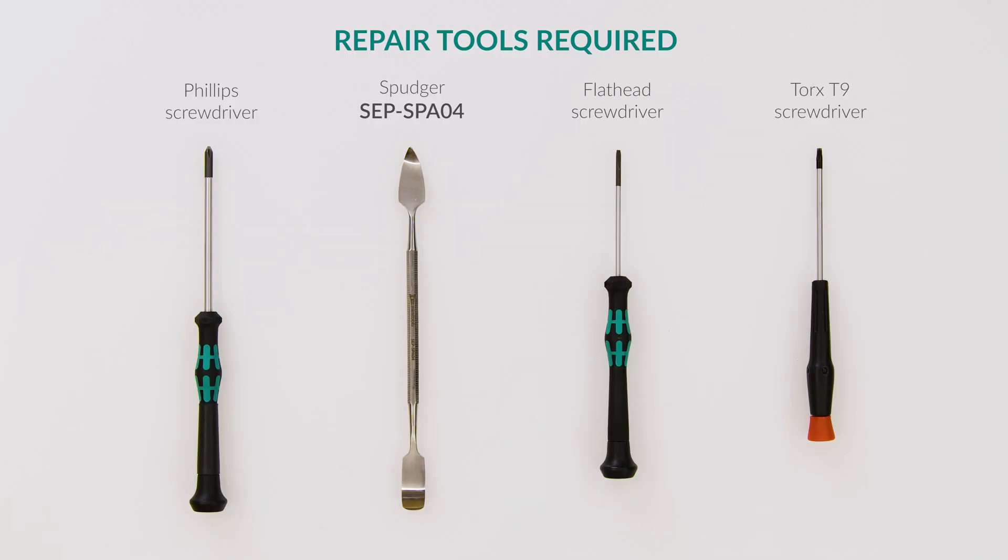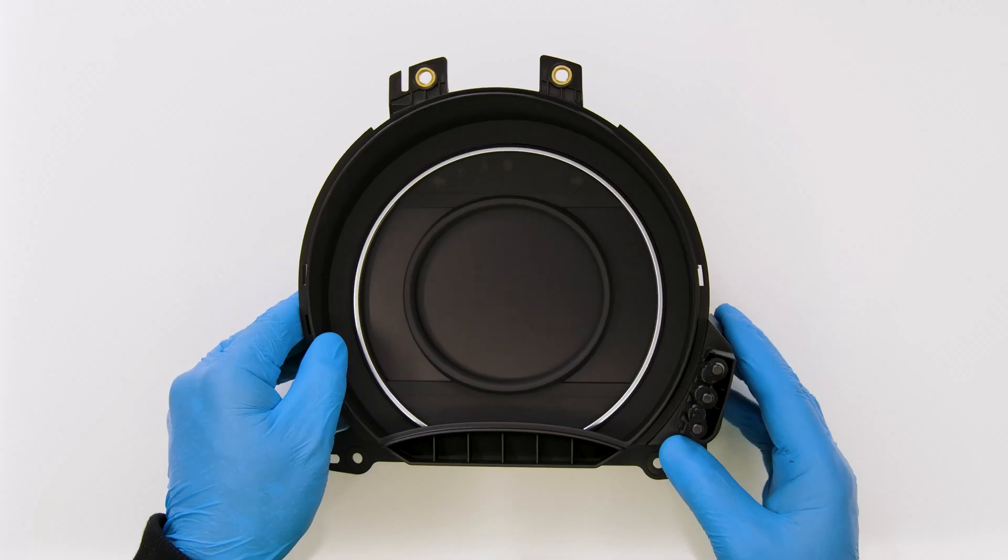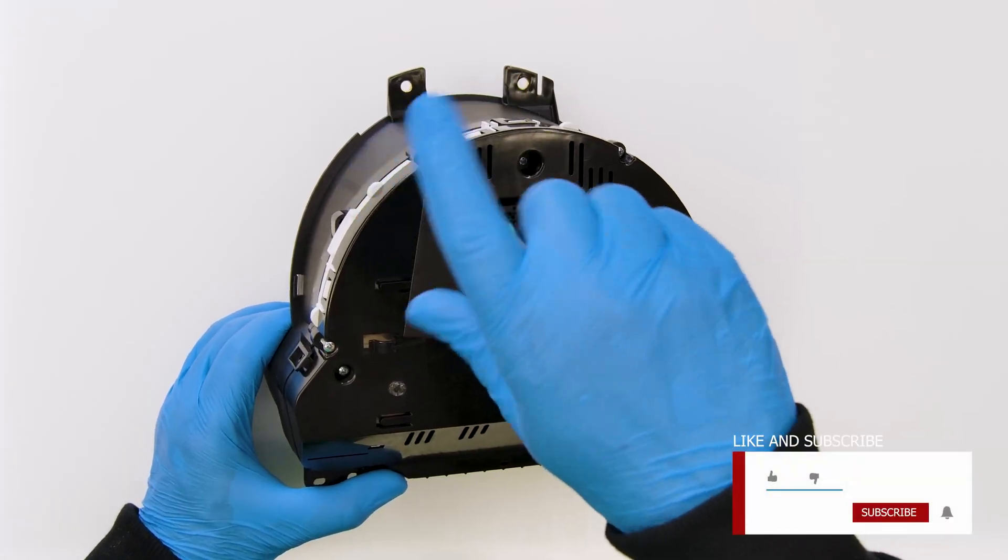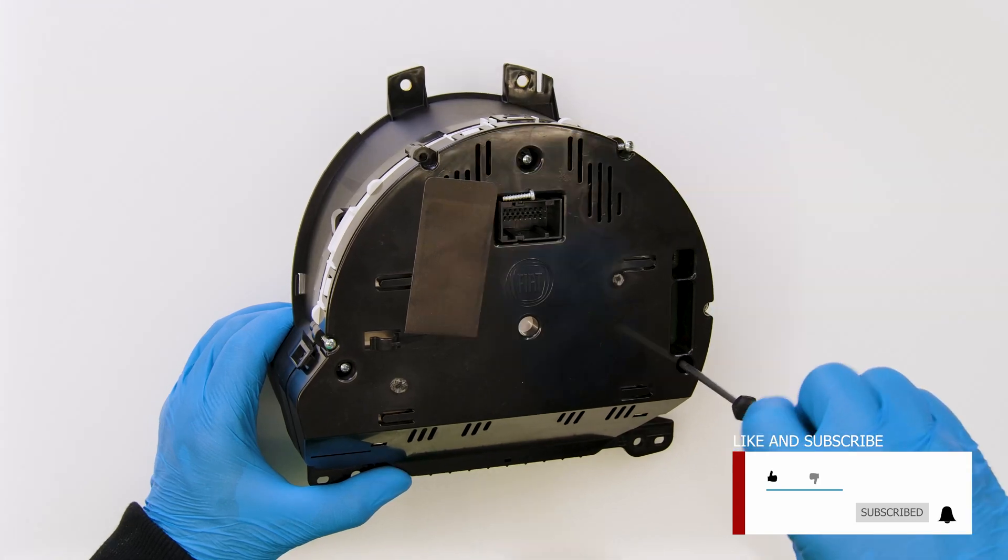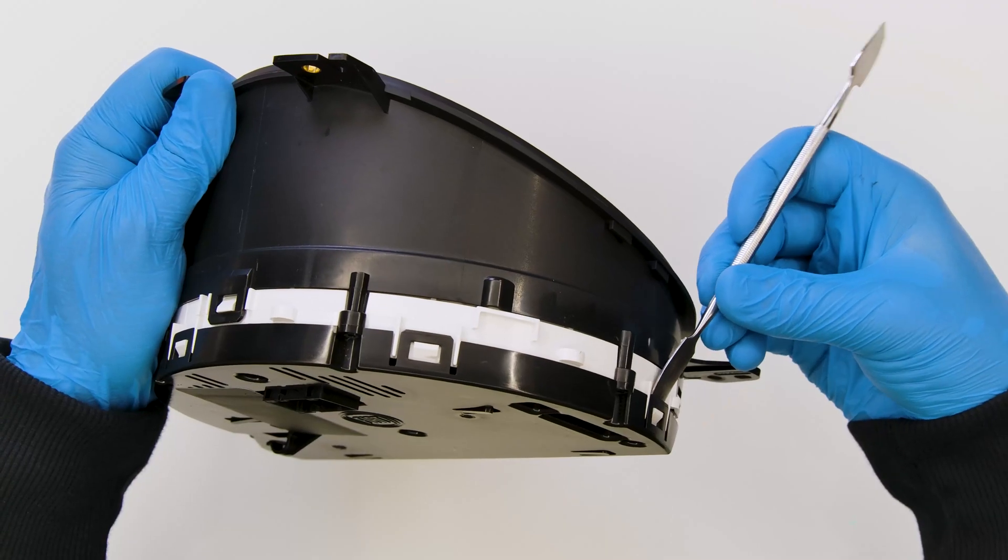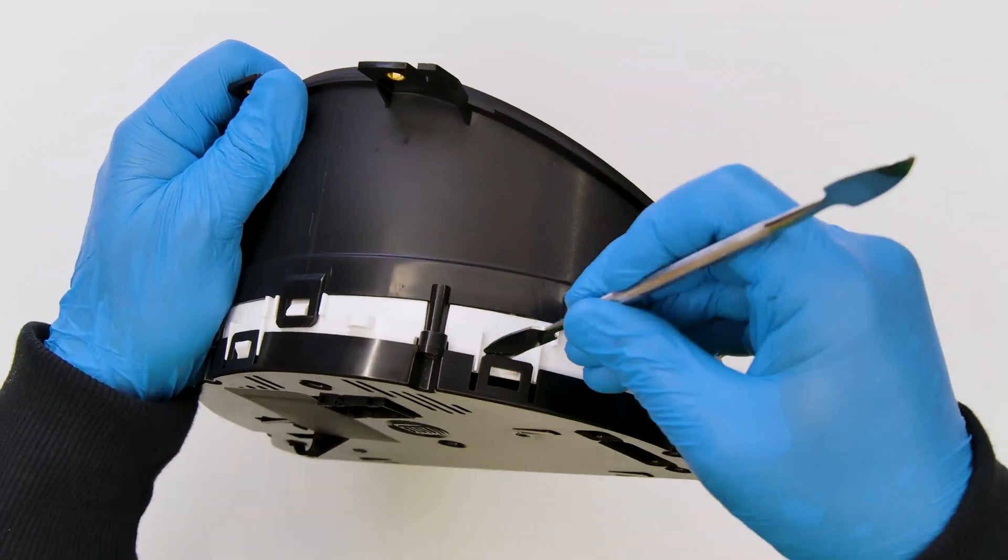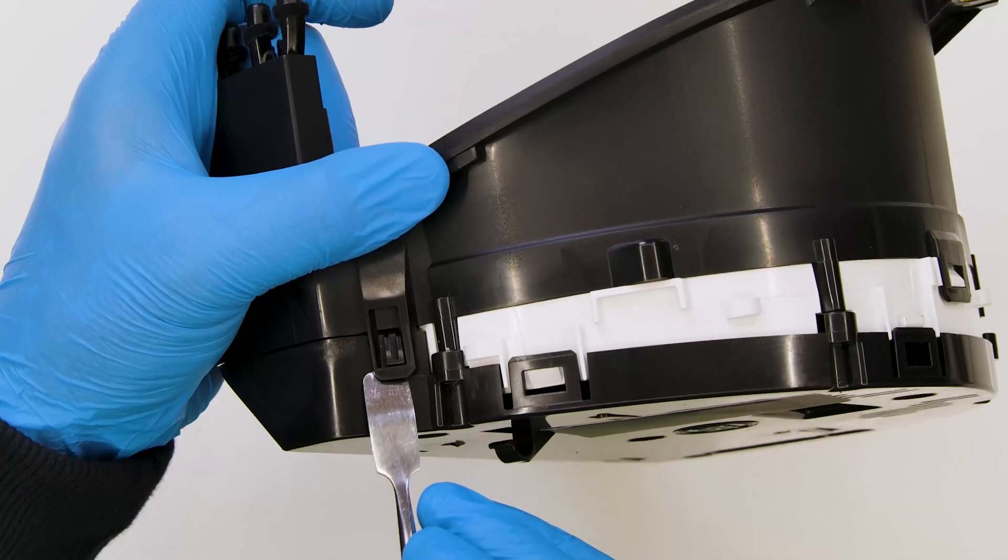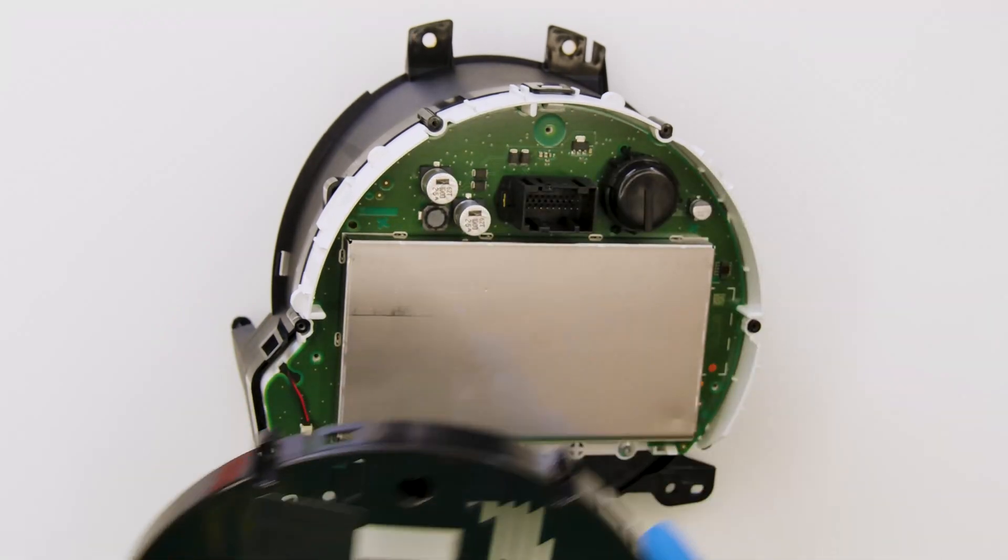For this repair you will need the following tools. Position the dashboard as shown and undo the rear screws. With the head of the spudger leverage on the plastic clips and remove the back cover.